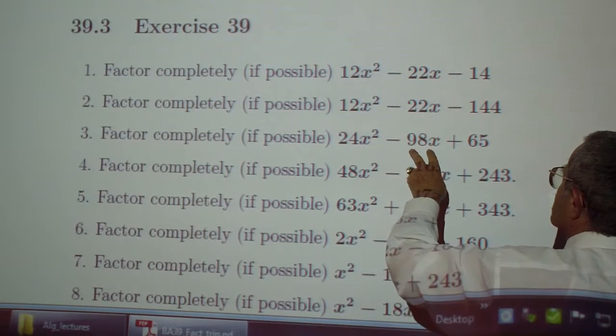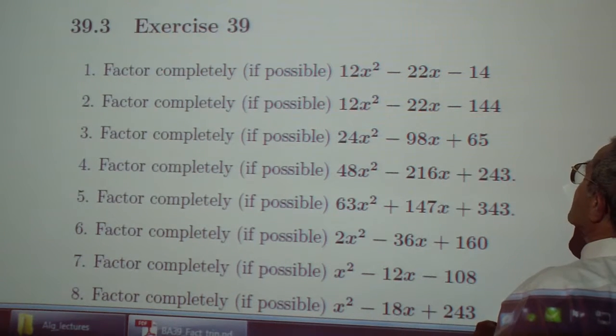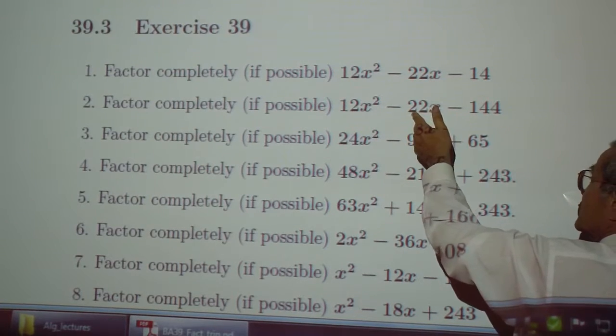Factor 24x squared minus 98x plus 65. Oh, this is 14. That's 144. Maybe that's right.